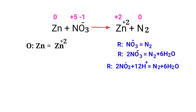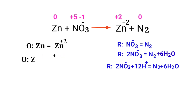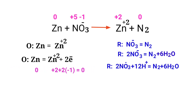For a redox reaction, the sum of charges must be equal on both sides. In the oxidation half reaction, both sides are not equal. You cannot add protons to balance charges — adding two protons to the left side would be wrong. Instead, add two electrons to the right side to make both sides equal to 0.